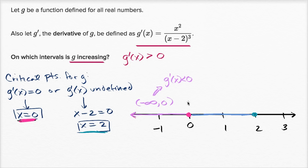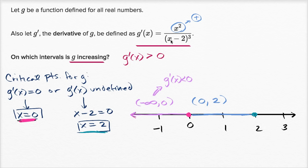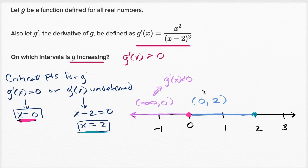Now let's take the interval from zero to two. The numerator x squared is still positive for x greater than zero. For x between zero and two, x minus two is still negative — for example, if x equals one, one minus two is negative one. Raising that to the third power still gives a negative value. So you still have g prime of x less than zero on this interval.